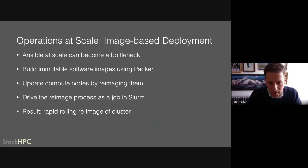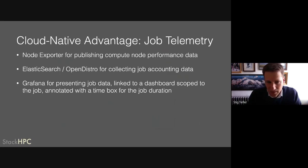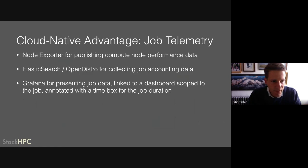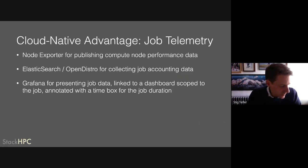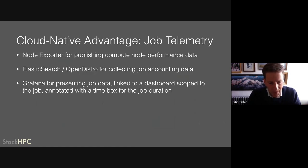The other thing I wanted to show is what we can do when deploying things in a cloud-native way — we can bring in some fairly cool other pieces and stick them together using a parameterized configuration deployment. We can use things like the Prometheus node exporter on our compute nodes and Elasticsearch or OpenDistro for collecting job queue data from the machine. We can then link that together to provide users of the service with telemetry data, and click through to a dashboard of node exporter telemetry, time-boxed and only presenting the compute nodes their job was running on for the duration of the job runtime.